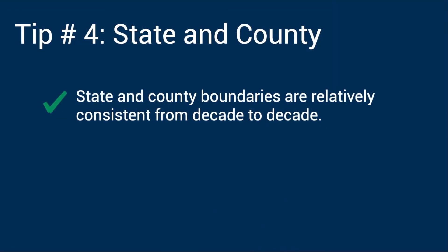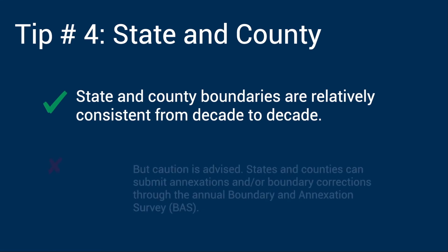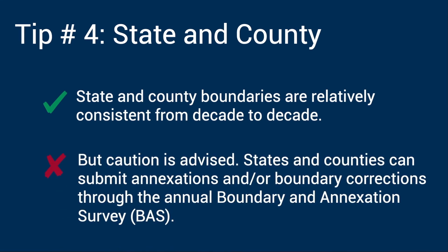Tip number four: another option that is relatively consistent from decade to decade is counties. Even when working with higher levels of geography such as counties and states, you need to make sure that their boundaries remain the same. Although it is more common to see annexation at a city or town level, it is possible but less common for annexation to happen in a county or state. States and counties can submit annexations and boundary corrections through the annual boundary annexation survey, but the frequency of updates to county boundaries is small compared to updates for other legal geographies such as incorporated places.